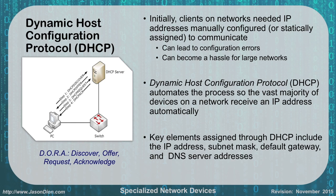The DHCP server then gives the client what's called a lease, which can be configured by the administrator — typically three days, seven days, or 30 days. After the lease expires, the DHCP server checks with the computer to see if it still needs that IP address. If yes, it renews for another period. If no, or if it can't reach the client, it takes it back. When the PC comes online again, it will request a new IP. As a client, it doesn't need the same IP all the time — it just needs an IP to use.